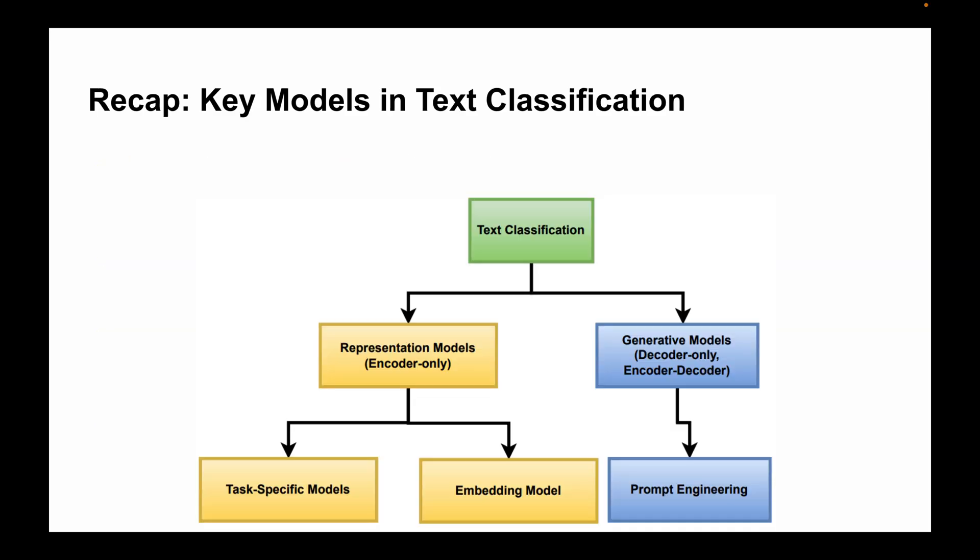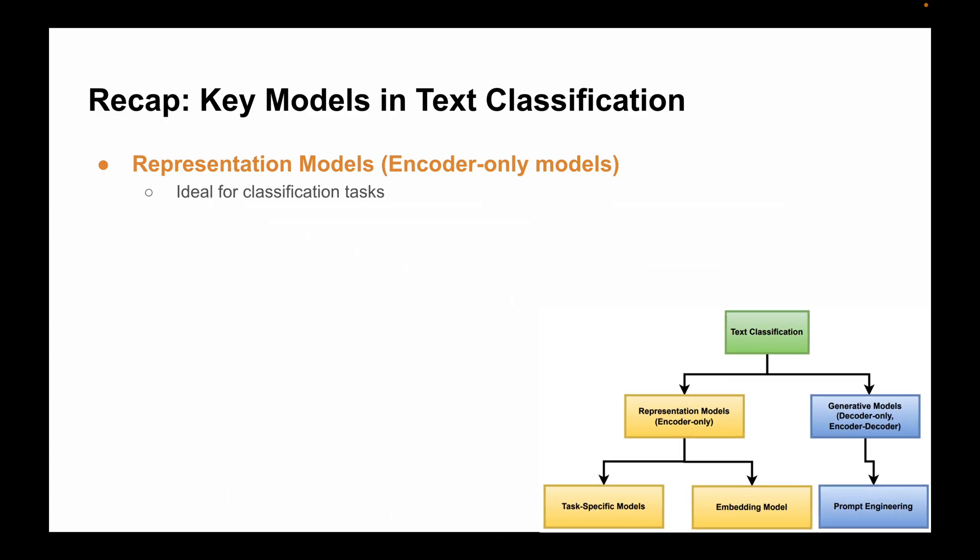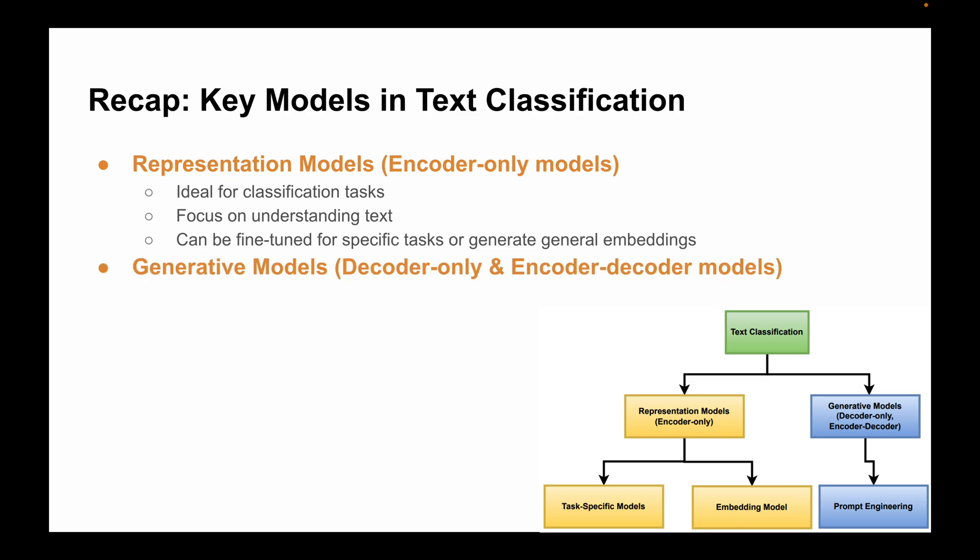Let's recap what we learned today. First, representation models - these are great for classification tasks because they focus on understanding text and can be fine-tuned for specific tasks or used for general embeddings. Then generative models - these are more flexible but require guidance in the form of prompt engineering to generate accurate labels or sequences.